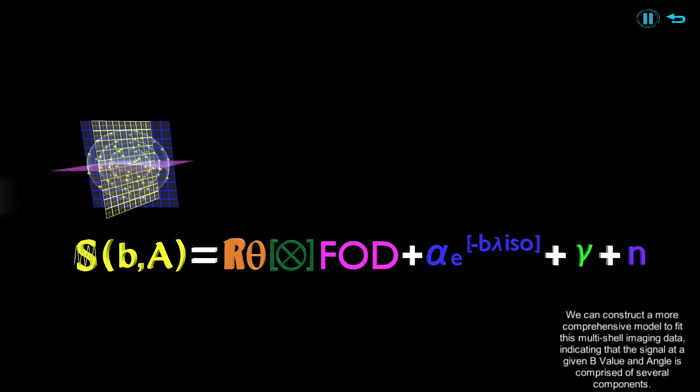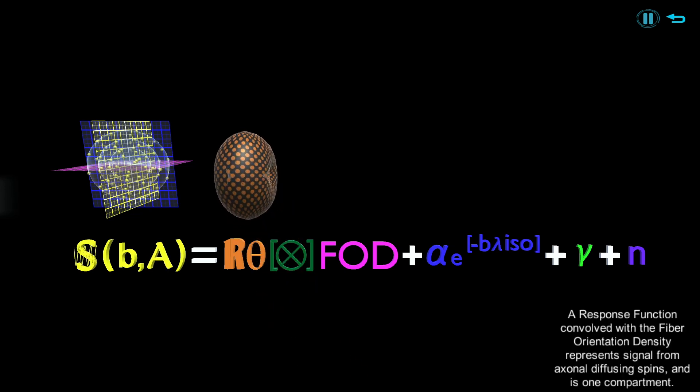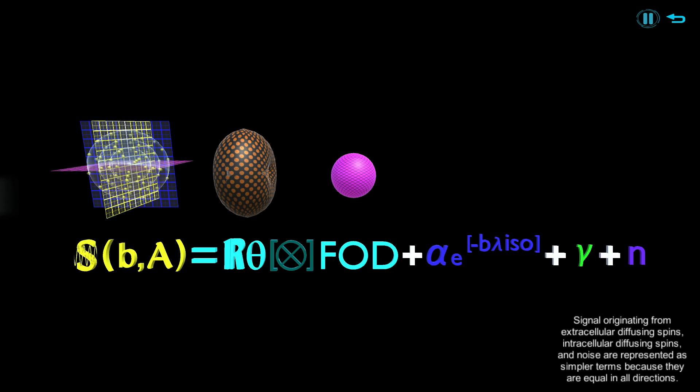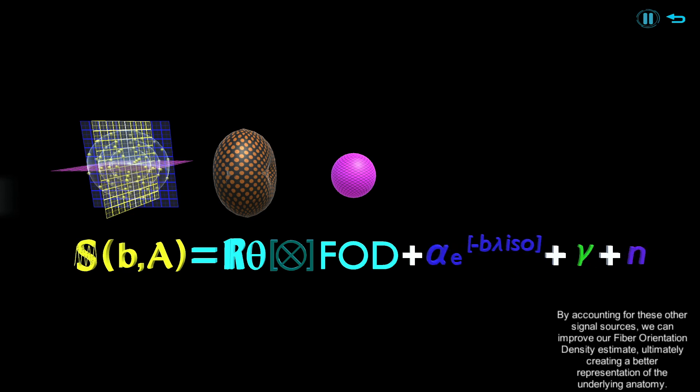A response function convolved with the fiber orientation density represents signal from axonal diffusing spins and is one compartment. Signal originating from extracellular diffusing spins, intracellular diffusing spins, and noise are represented as simpler terms because they are equal in all directions. By accounting for these other signal sources, we can improve our fiber orientation density estimate, ultimately creating a better representation of the underlying anatomy.